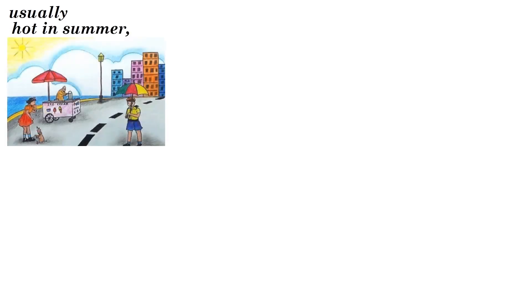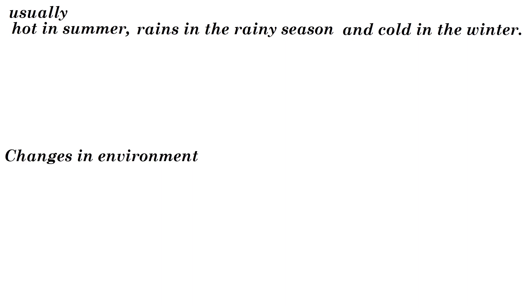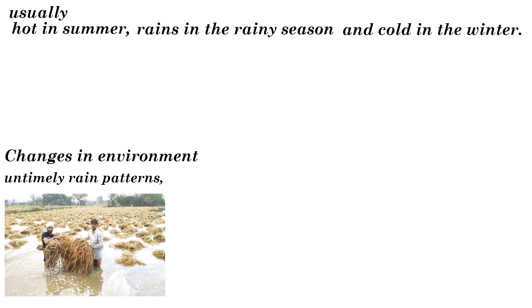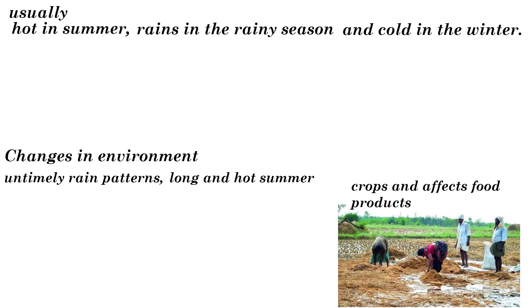Usually, it is hot in summer, it rains in the rainy season, and it is cold in winter. This is a natural pattern. But we find changes in the environment that have affected these patterns. Untimely rain patterns and long, hot summers impact crops and food production.